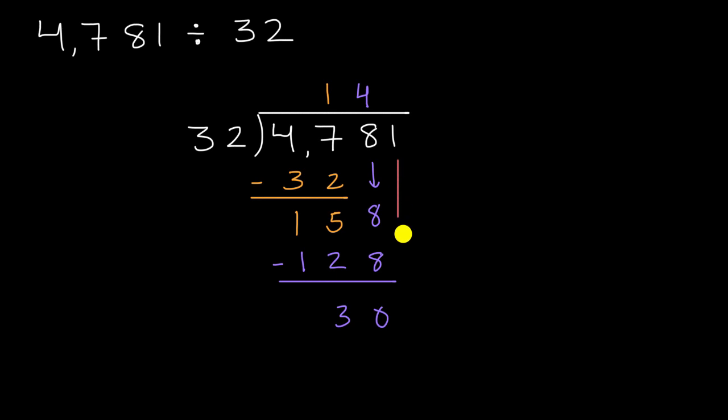And then we can bring down that one. Now how many times does 32 go into 301? Well, we might be tempted to say, well, this is close to 30. This is close to 300, so maybe it's 10. But 10 times 32 would be 320, so that'd be too much. So I feel good about nine as my estimate.